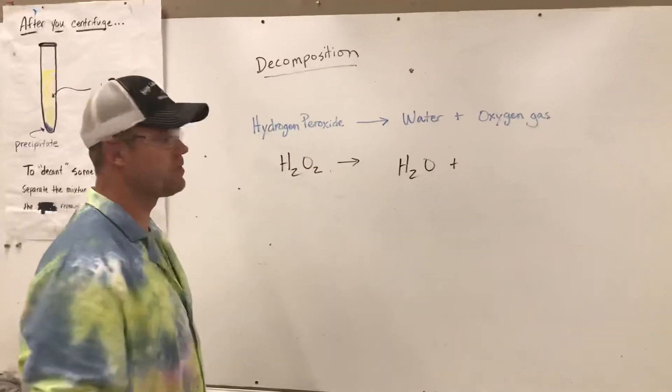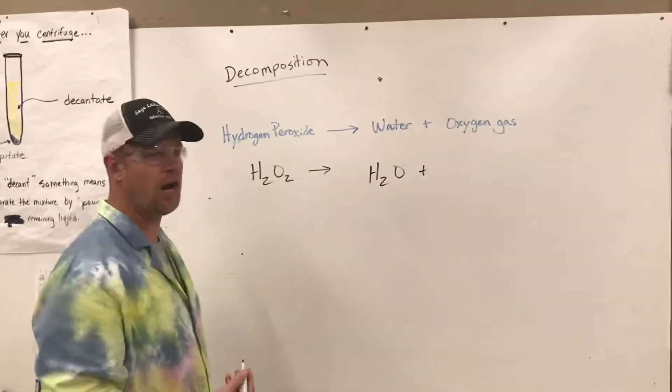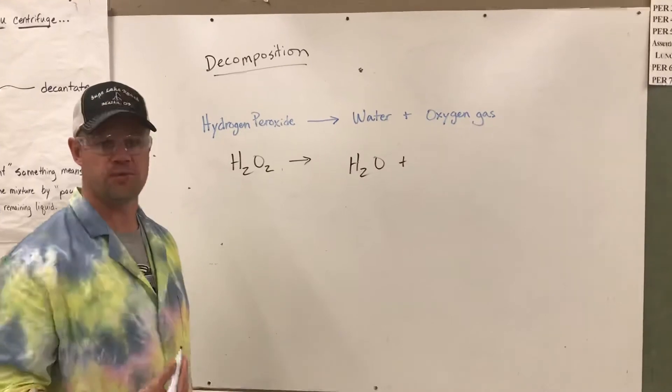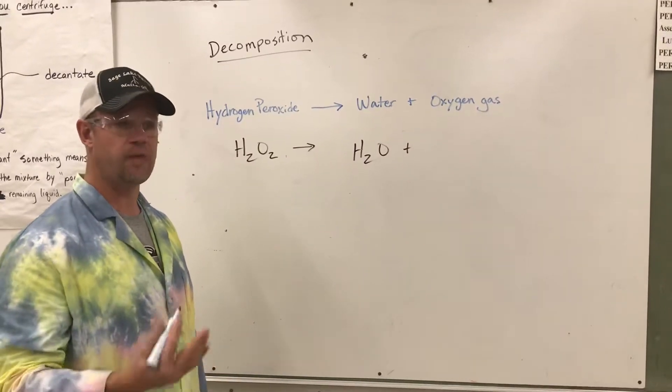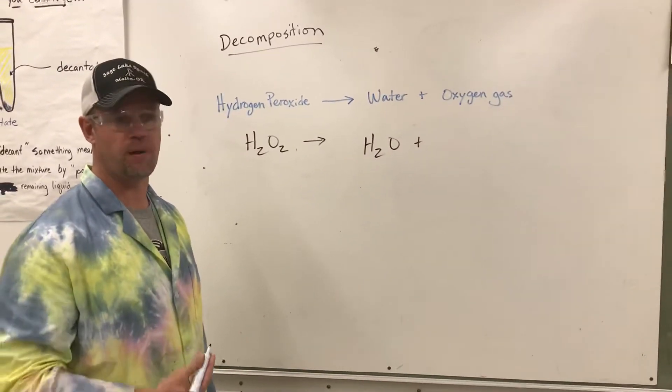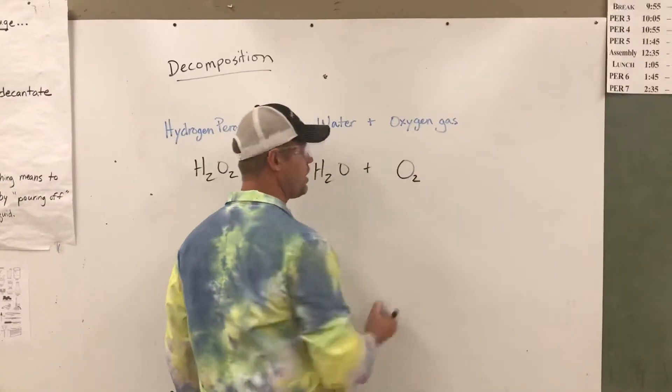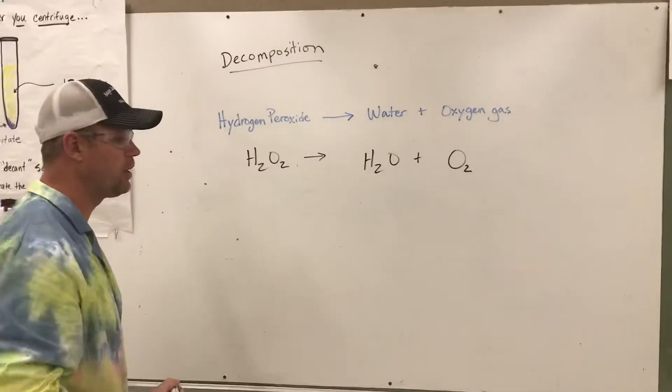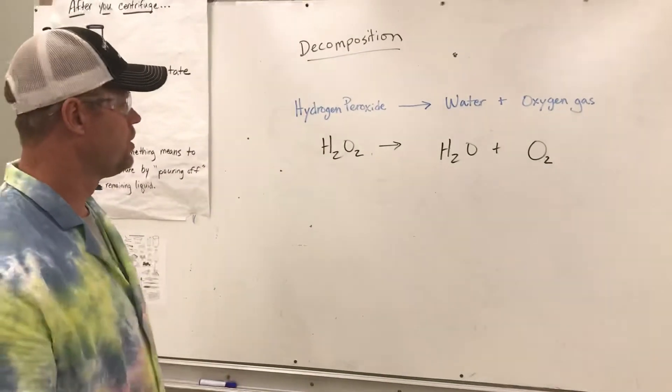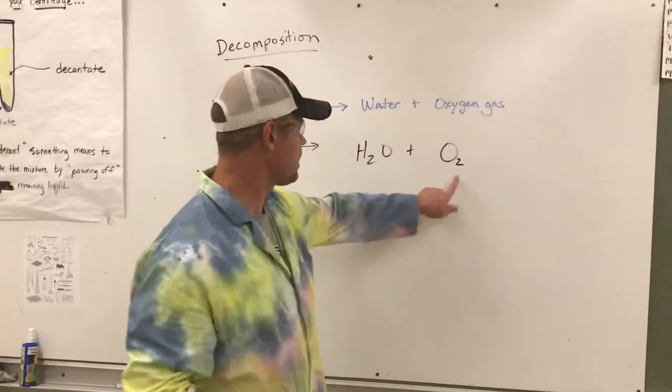Oxygen gas is one of those diatomic elements. We never find oxygen atoms floating around by themselves in the air because they're too reactive. They're too unstable. They always combine with something. So when pure oxygen gas is present, it's always in pairs. It's always O2. They'll always find a partner to hang out with. So this is water, and this is oxygen gas.